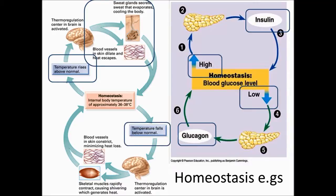When the temperature falls below the normal temperature, the brain sends signals to the skeletal muscles to contract or shiver to release heat, and to the blood vessels in the skin to constrict to increase body temperature.